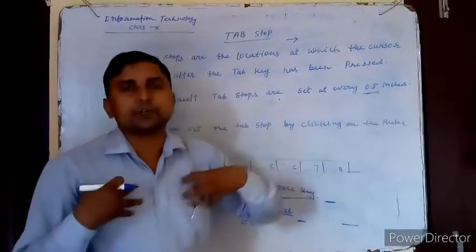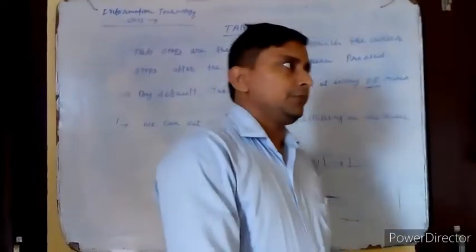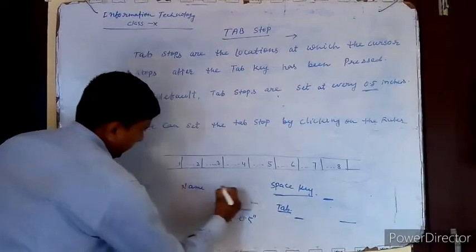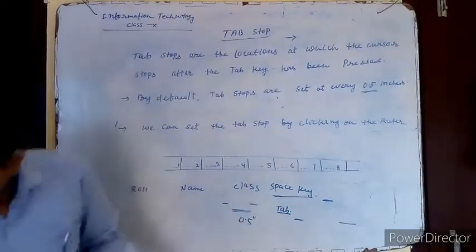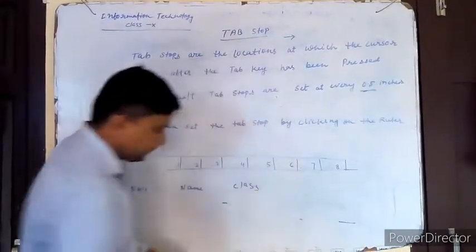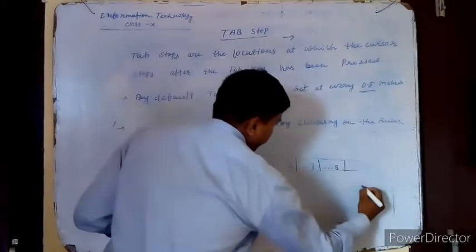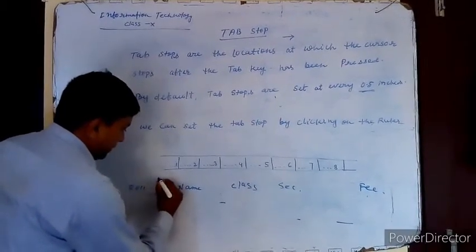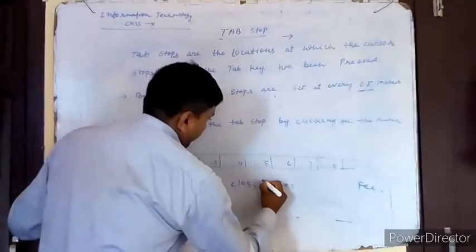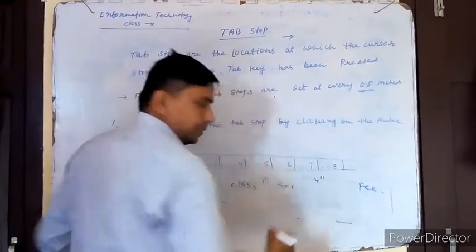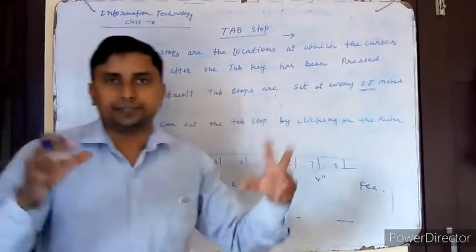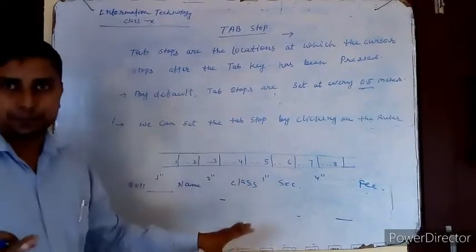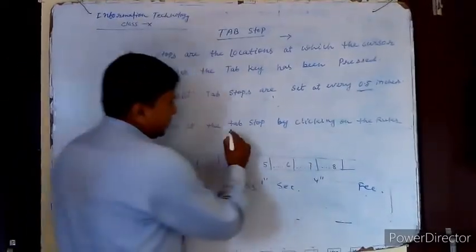We can change the tab stop key according to our requirements. For example, suppose you want to write roll number, name, class, section, and percentage. The spacing between these columns can be different — for instance, one inch, two inch, two inch, one inch, and four inch. Such different spacing is possible using tab stops. We can set the tab stop key by clicking on the ruler.